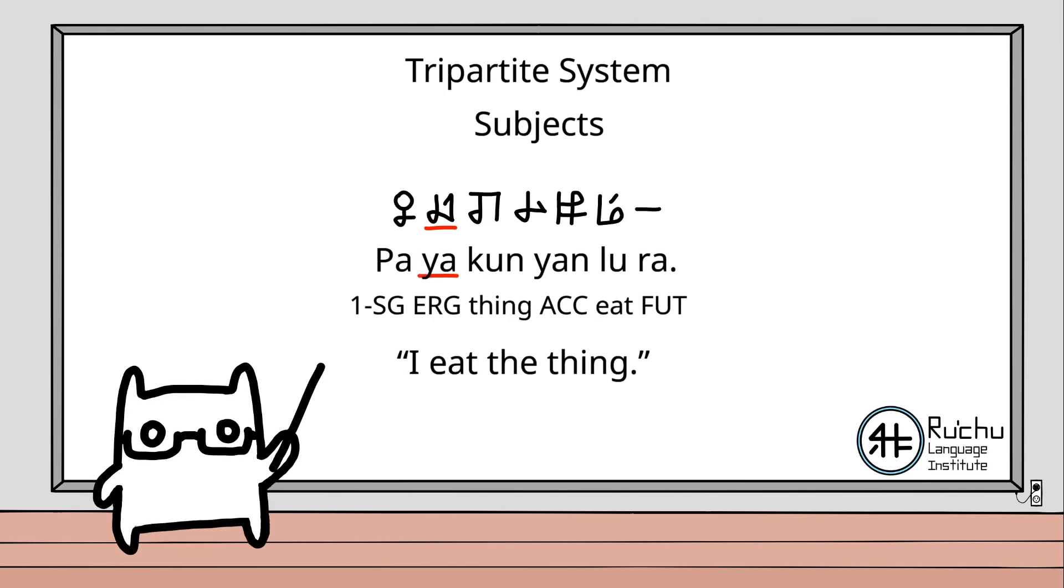Here, the ergative marker 야 is used with the first person singular subject 바, meaning I. This is because the subject acts upon the sentence's object kun, meaning thing.